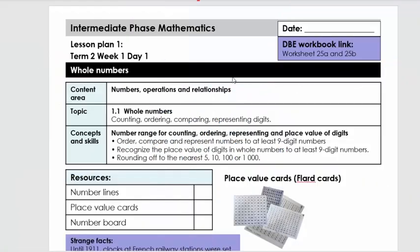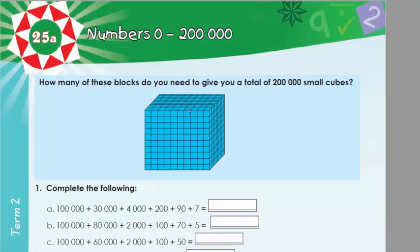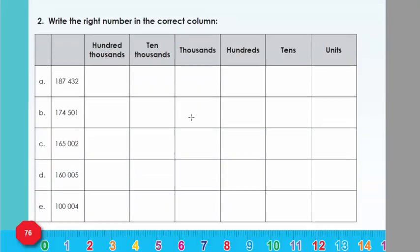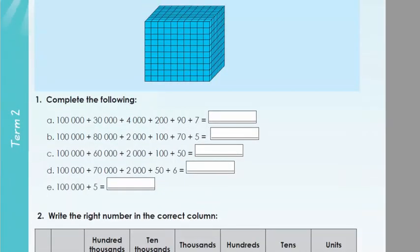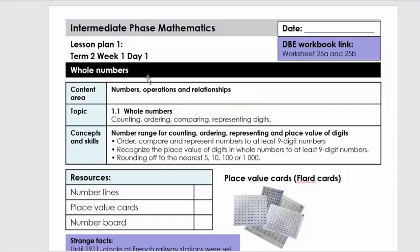Good day everybody. Today we're going to do lesson plan one of Grade 6 Term 2. Our topic is whole numbers. In the right-hand side corner you will also see the DBE workbook link, so it links to worksheet 25a and 25b. Let me quickly show you - this is the worksheet from the DBE book that you can do. Then I go back to the lesson plan.